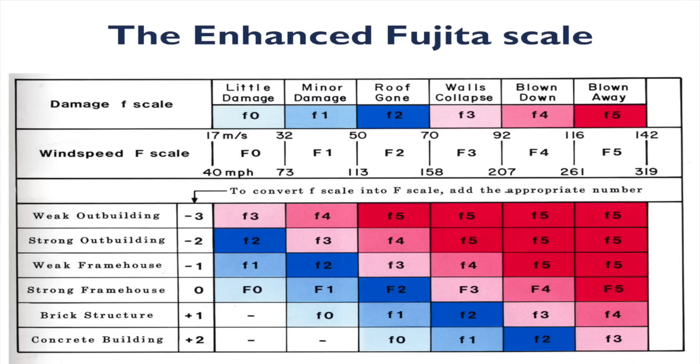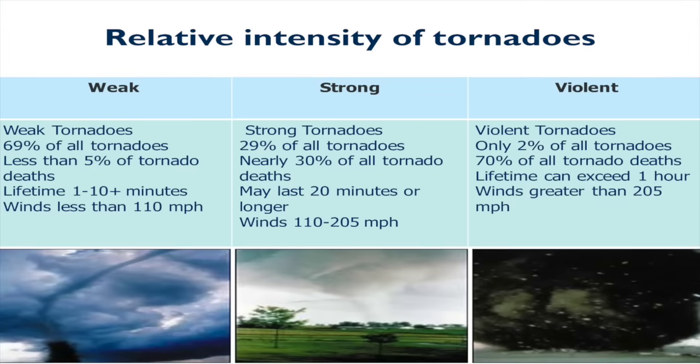With respect to size, we have three main categories: weak, strong, and violent. The weak tornadoes comprise about 69% of all tornadoes. However, they cause only about 5% of the tornado deaths. Their lifetime is relatively brief, 1 to 10 minutes on the ground before they dissipate, and wind speeds of less than 110 miles per hour. We usually see some tree damage, some roofing or windows broken, but not major structural damage.